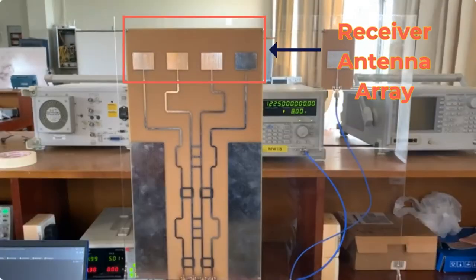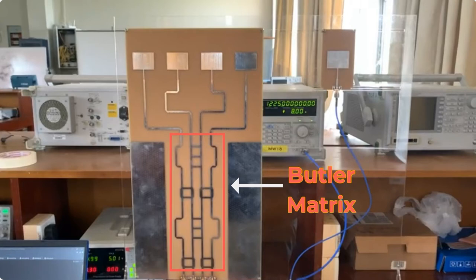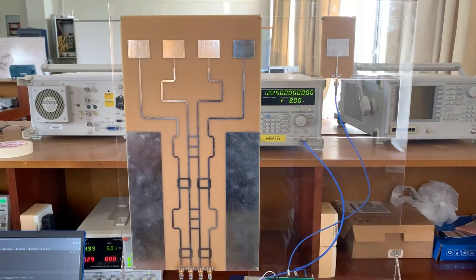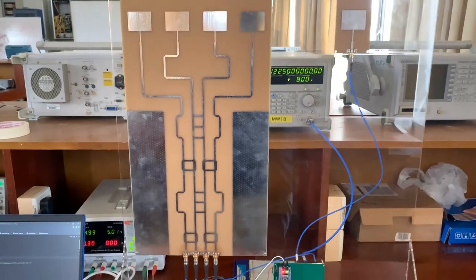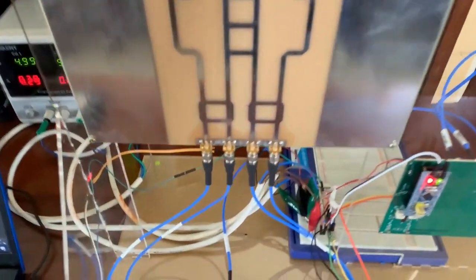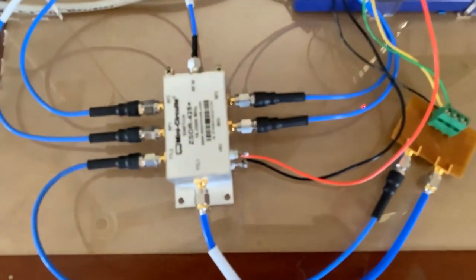The Doppler modulated reflected signal is received by an array of four patch antennas. We have designed a 4x4 Butler matrix to provide the directional sensing capability. With the Butler matrix and the antenna array, we can obtain four beams from four directions.